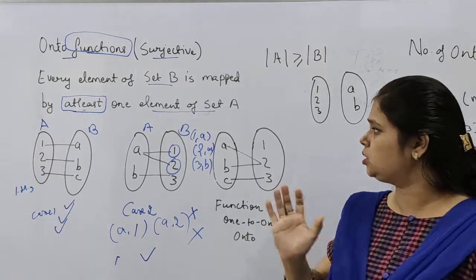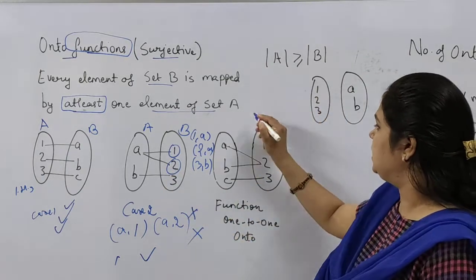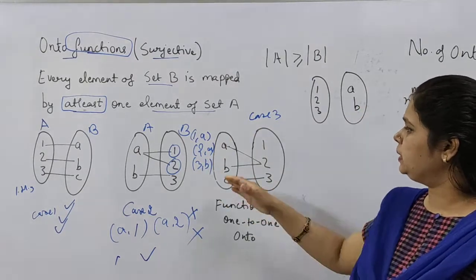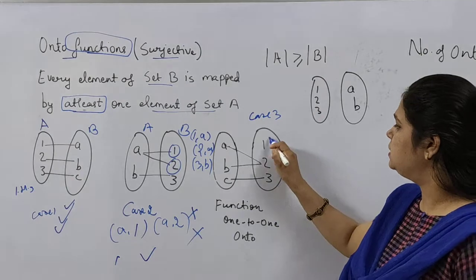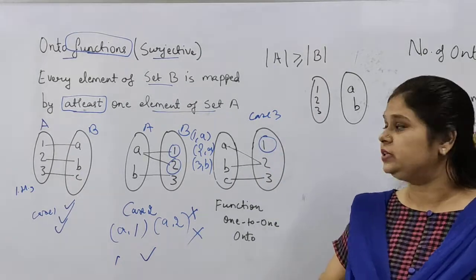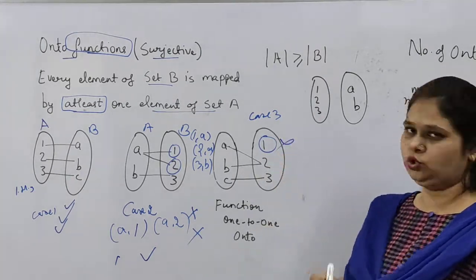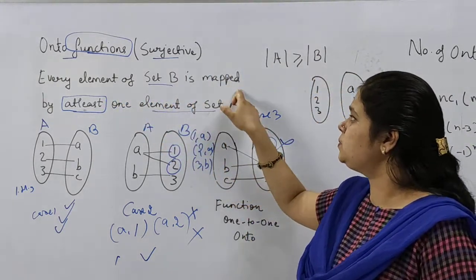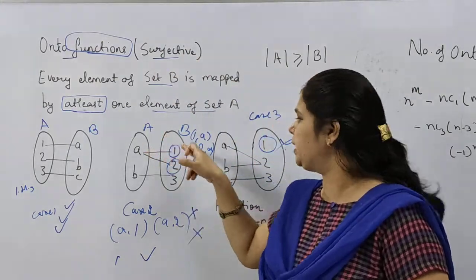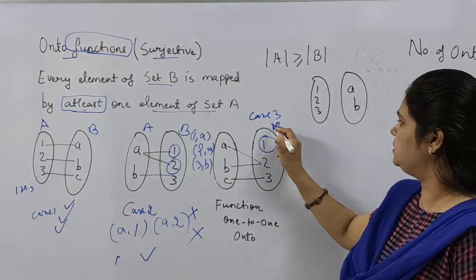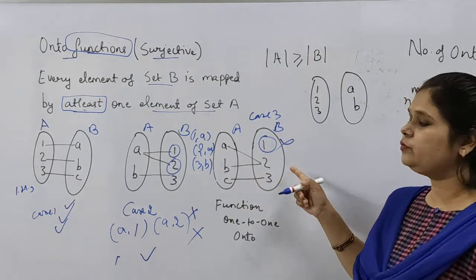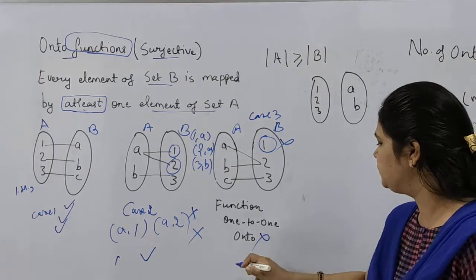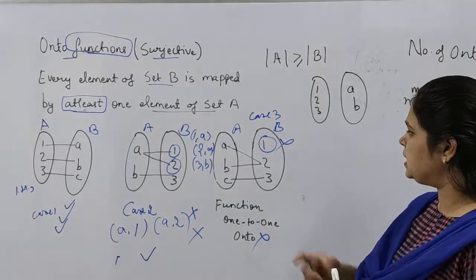I hope you need to understand the definition properly so that you don't have confusion. So, this is about case 3. Let me see case 3. Case 3, we have taken same diagram. But see here, this is one. Does one have mapping present? No. Why? Because definition is telling, every element of set B is mapped by at least one element. In set B, this is set B, and this is set A. In set B, we have a single element like one which is not mapped with any element. Hence, this is not onto.